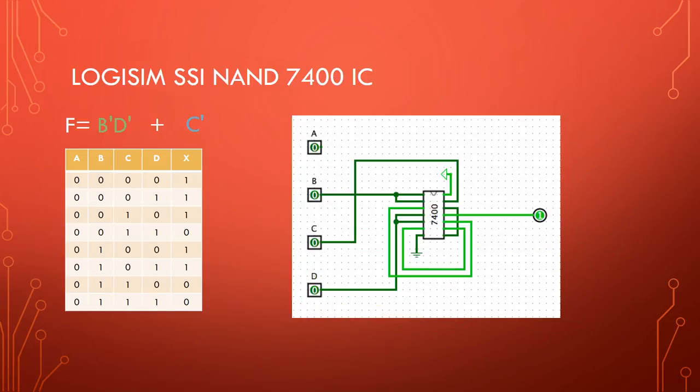Here we can see the implementation of the NAND only circuit using just one of the 7400 IC chips. As you can see, this schematic is much easier to follow than the other schematics that we used during this lab. This is just one of the benefits of using a NAND only circuit.